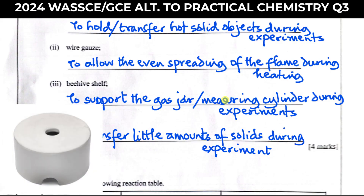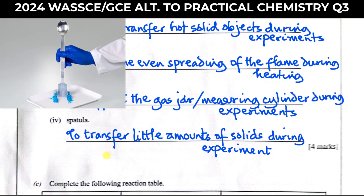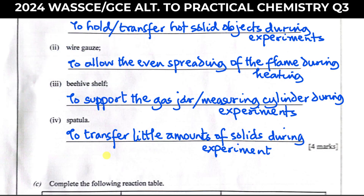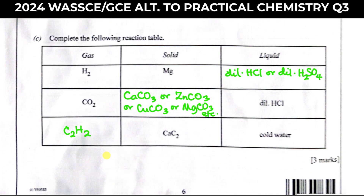The beehive shelf is used to support the gas jar or measuring cylinder during an experiment, especially experiments involving the preparation of gases. The thing on which the gas jar is always placed is called the beehive shelf. The spatula is an apparatus that looks like a two-headed spoon, used to transfer small amounts of solid during an experiment — for example, to transfer salt or a base from a container to a test tube or beaker.